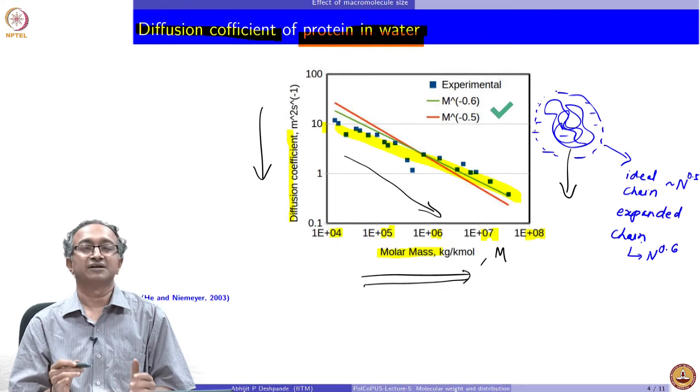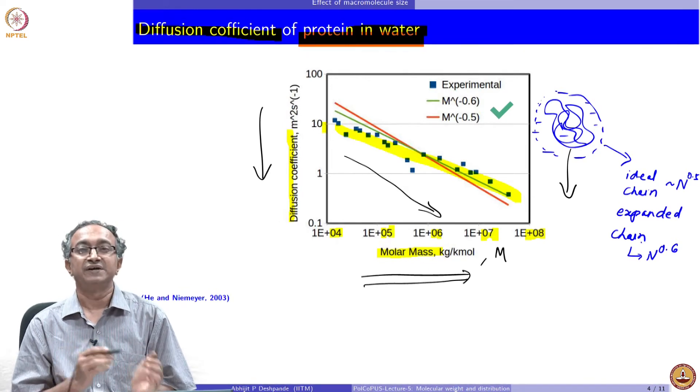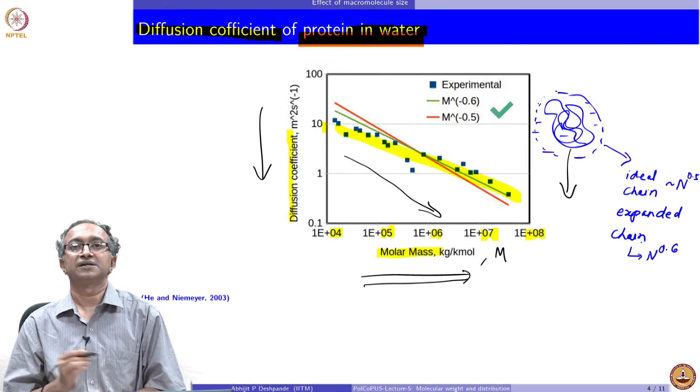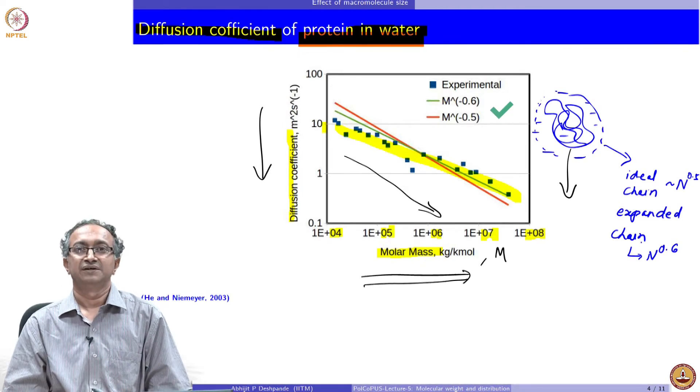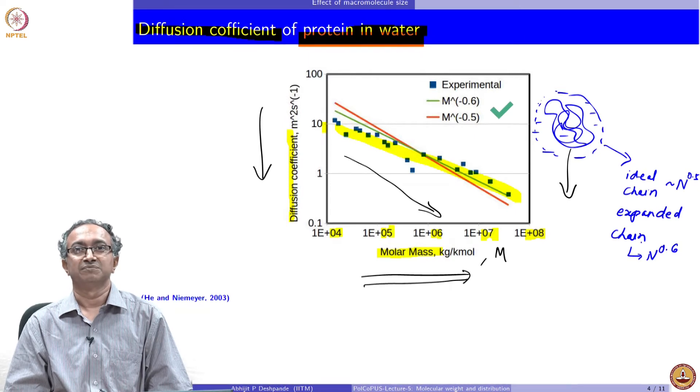The ideal chain says the radius of the sphere is proportional to N to the power 0.5, where N is the degree of polymerization — how many repeating units are on the polymer. For the expanded chain, it is N to the power 0.6. The degree of polymerization N is directly related to molar mass M through the number of repeating units. This shows how theories can quantitatively explain observed behavior — molecular size is very important in defining the properties of a macromolecular system.